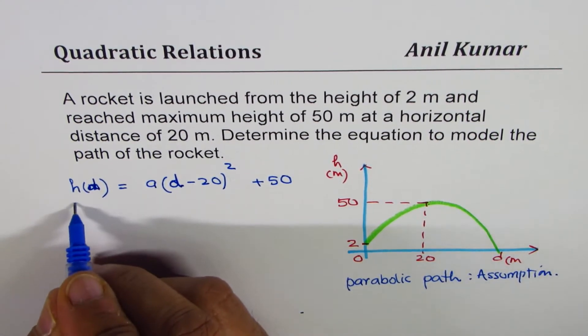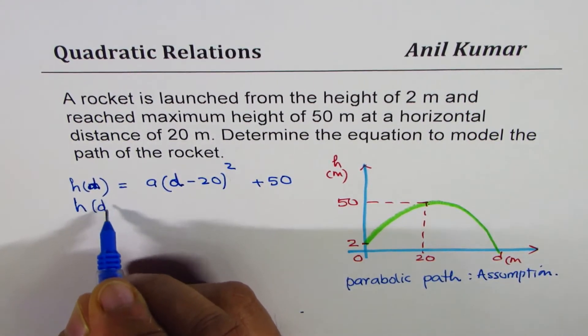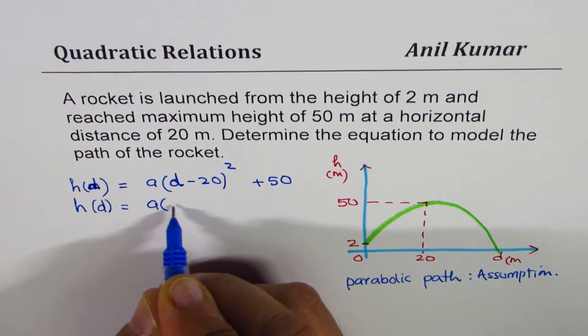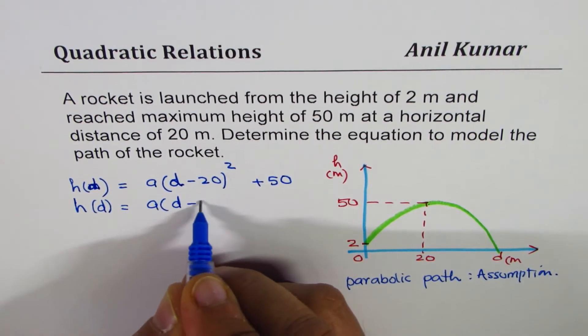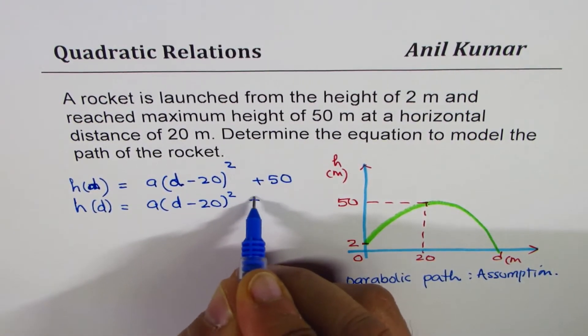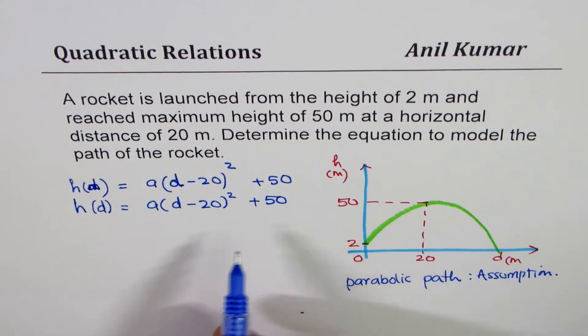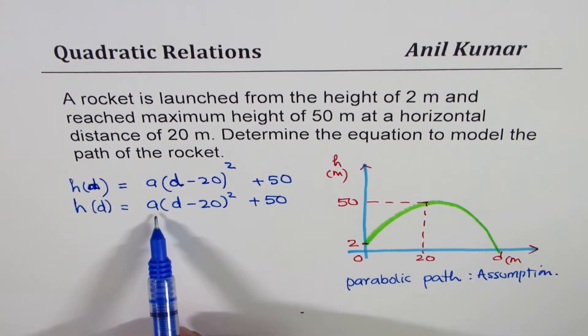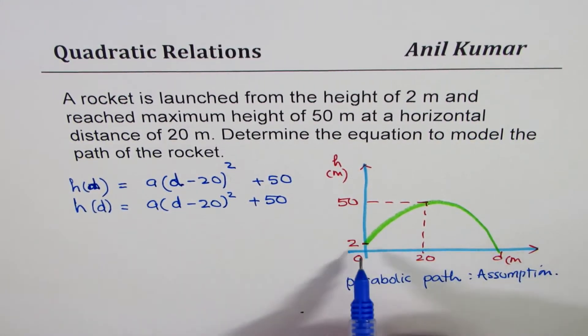Let me rewrite this. We are saying height as a function of distance is A times any distance D minus 20 whole square plus 50. Now, the question is, how do we get the value of A? We can always get the value of A from initial position.